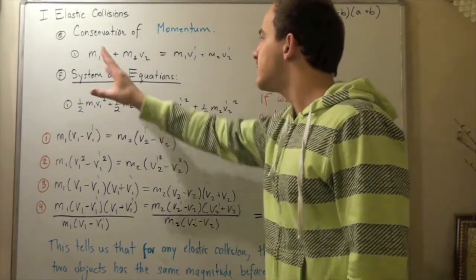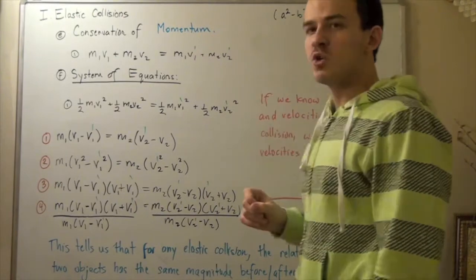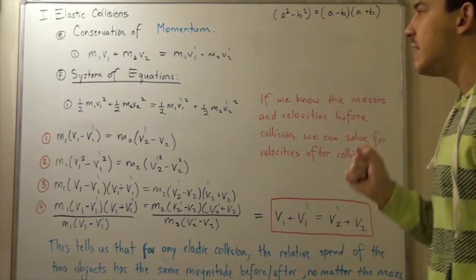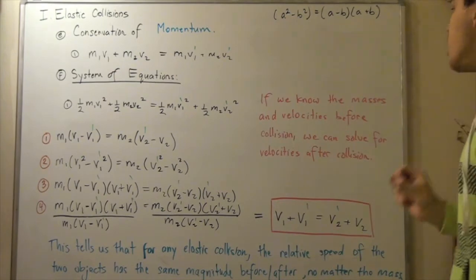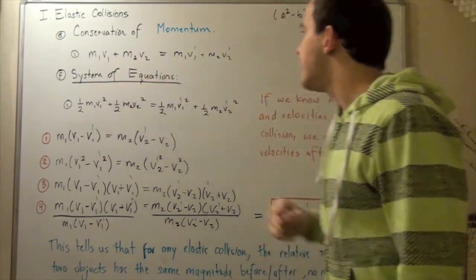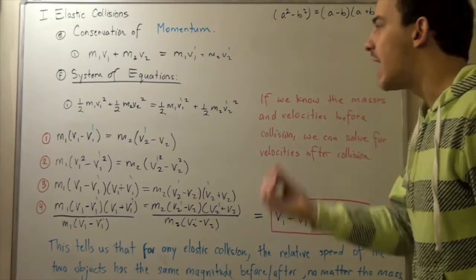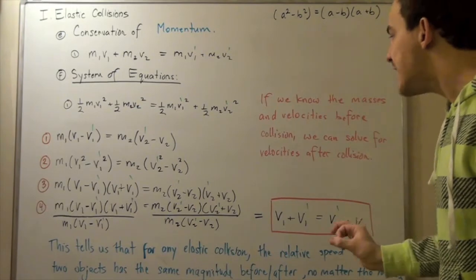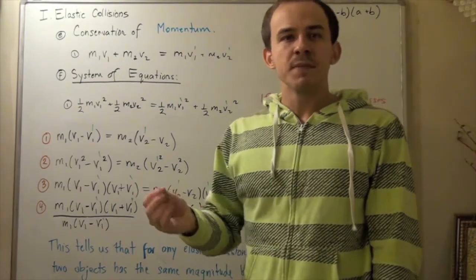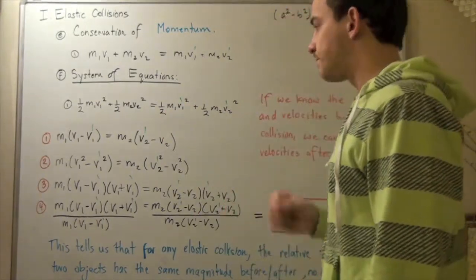If we know every single variable except any two unknowns, we can solve for those two unknowns using these two equations. If we know the masses of our objects, m₁ and m₂, and we know the initial velocities before collision, v₁ and v₂, we can then solve for the velocities after collision. Our goal here is to find an equation that will help us find the final velocities of our two masses, m₁ and m₂.